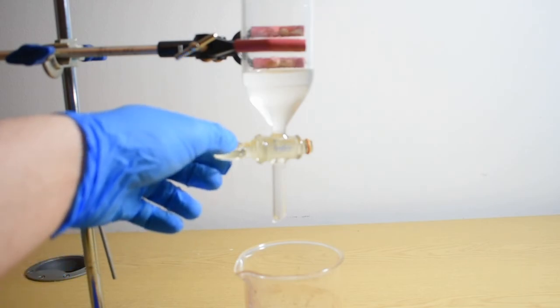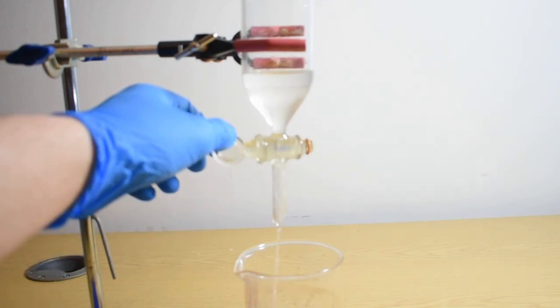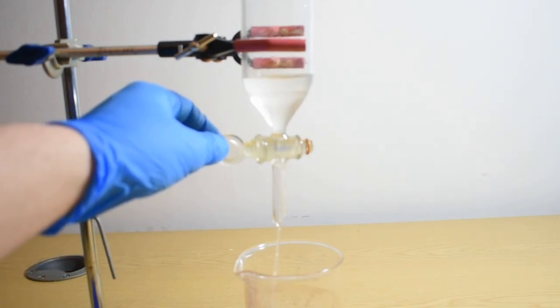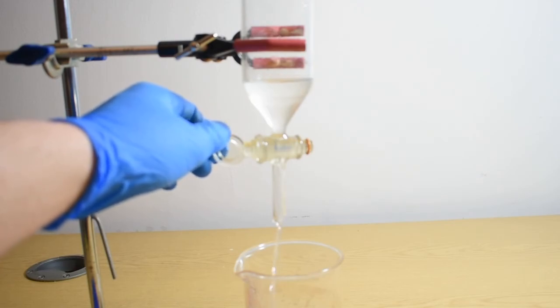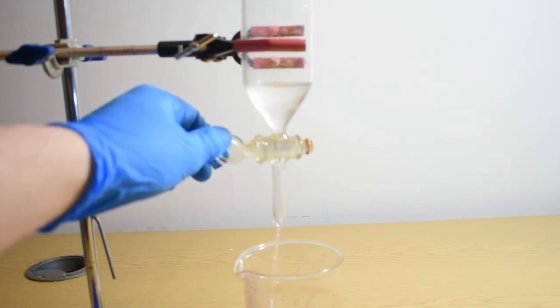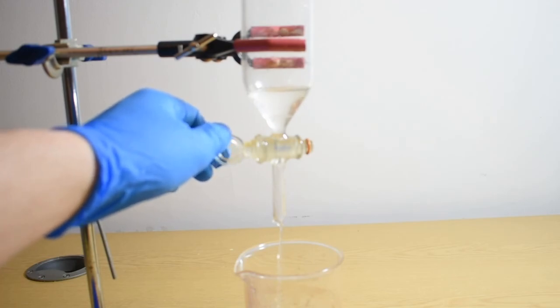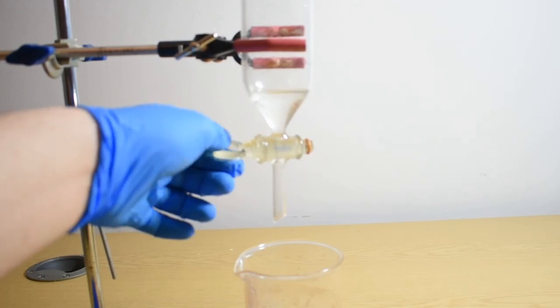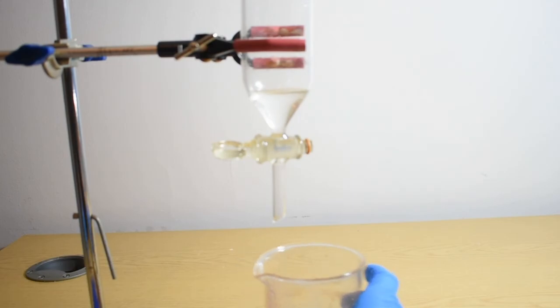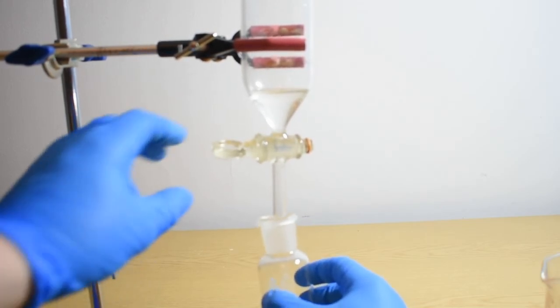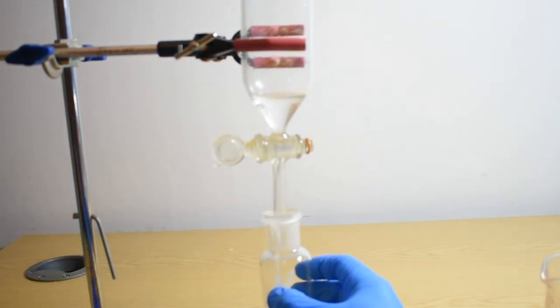Once the lower aqueous layer is drained what should remain in the separatory funnel is quite pure ethyl acetate. The washing steps are discarded and the product is emptied into a 60 milliliter bottle.